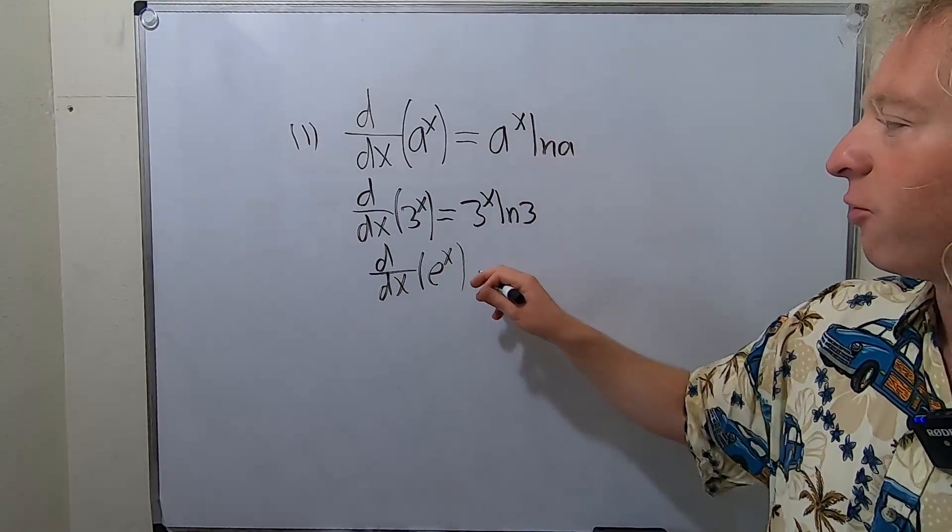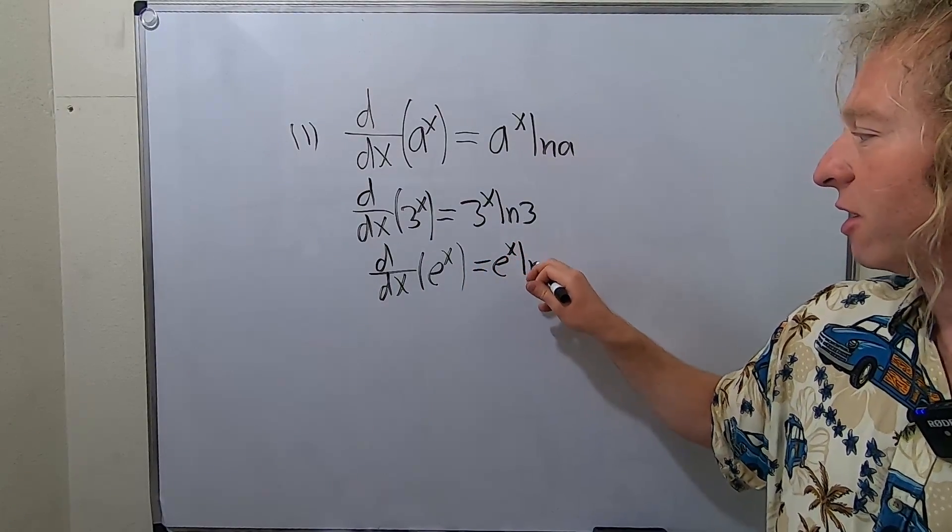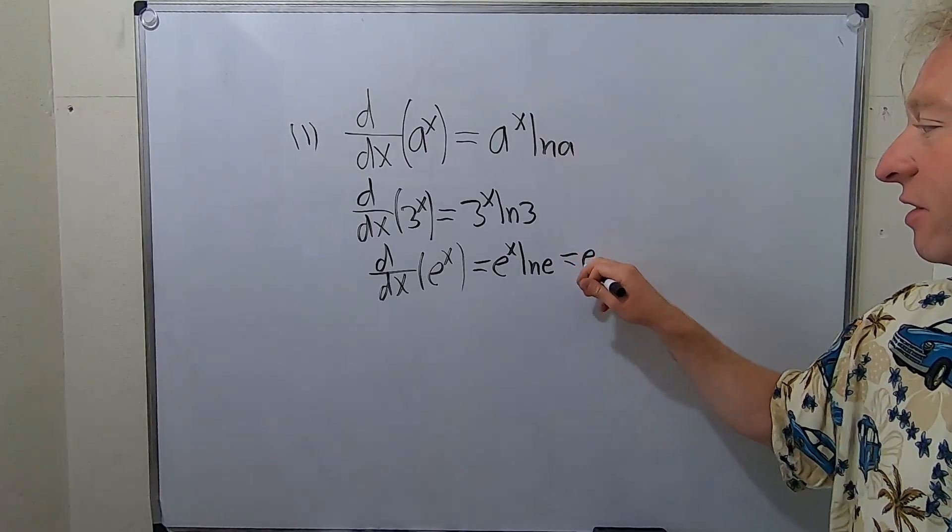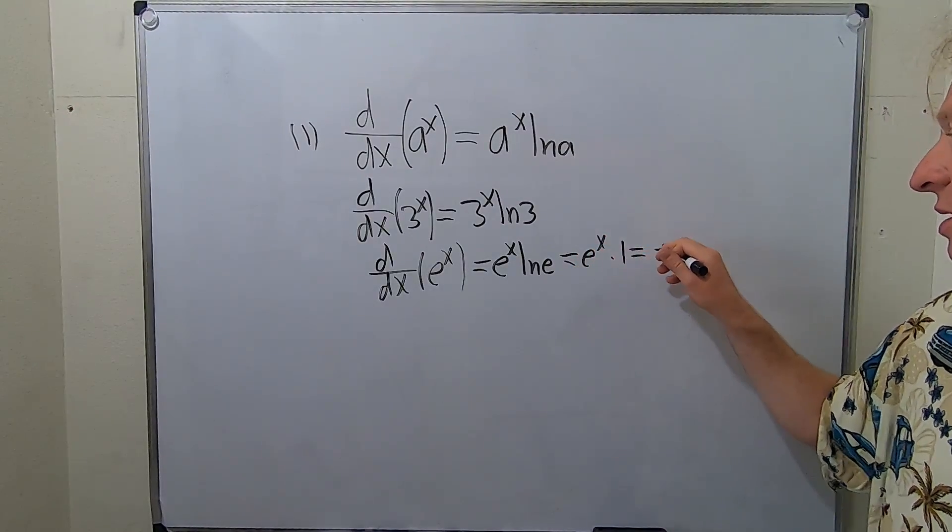So here, using this formula, it would be e to the x natural log of e. But the natural log of e is one. So this is just e to the x times one. So it's e to the x.